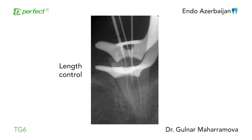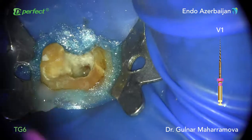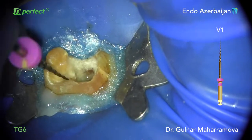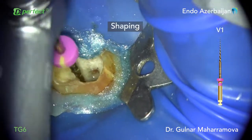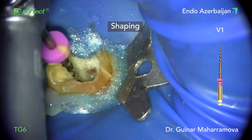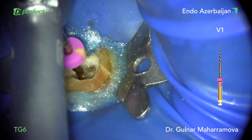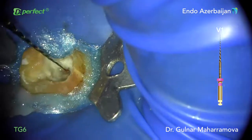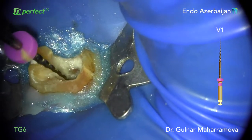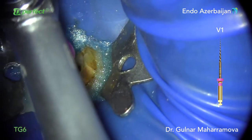Now, when we have a glide path, we can proceed with shaping the middle portion of the root canal system. For this purpose, I used V1 and V2 files. V1 is a 0.2 taper and V2 is a 0.4 taper file, which allow gradual and conservative shaping along comfortable paths to the apical portion of the root canal system.